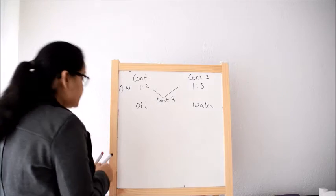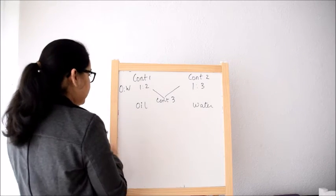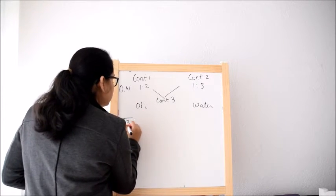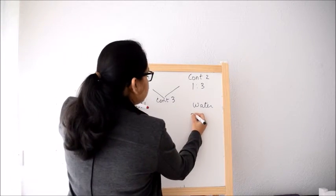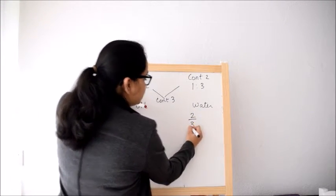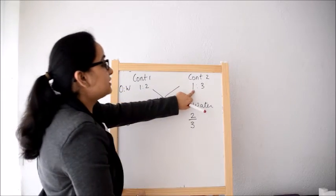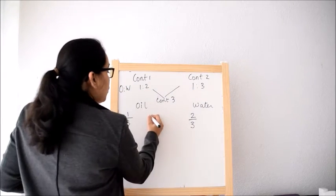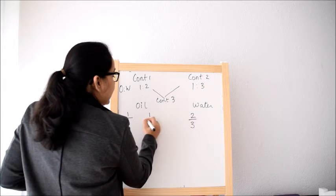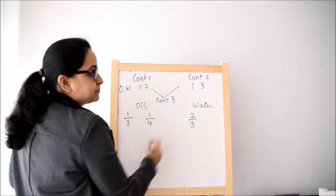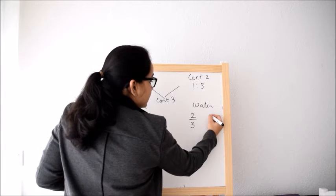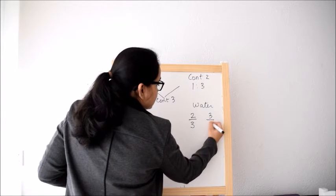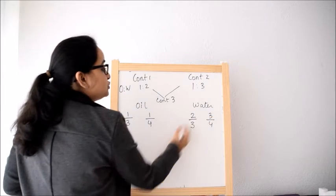What we understand here is there are 3 parts and out of which 1 is oil, and how much is water? 2 is water out of 3. Now in container 2, 1 is oil and there are 4 parts, 3 plus 1. And in container 2 there are 3 by 4 parts of water.